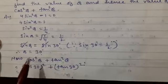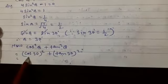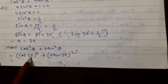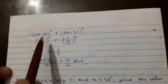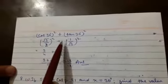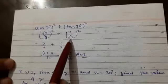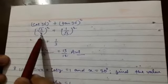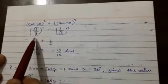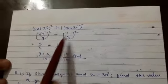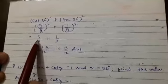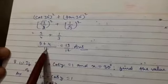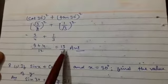Now the second part: cos²θ + tan²θ. Substituting θ = 30°: cos²30° + tan²30° = (√3/2)² + (1/√3)² = 3/4 + 1/3. Taking LCM of 4 and 3 which is 12: (9 + 4)/12 = 13/12. This is our answer.